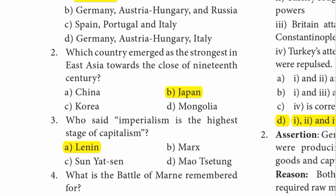Second one: which country emerged as the strongest in East Asia towards the close of the 19th century? The answer is B option — Japan.